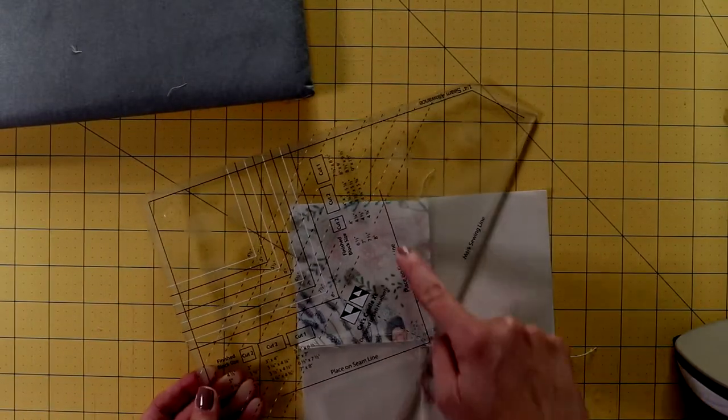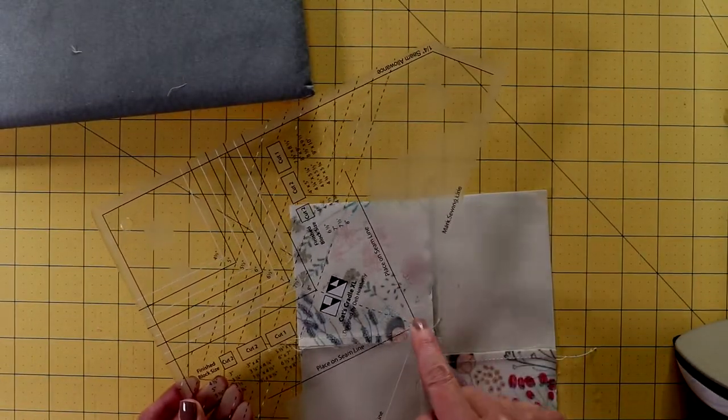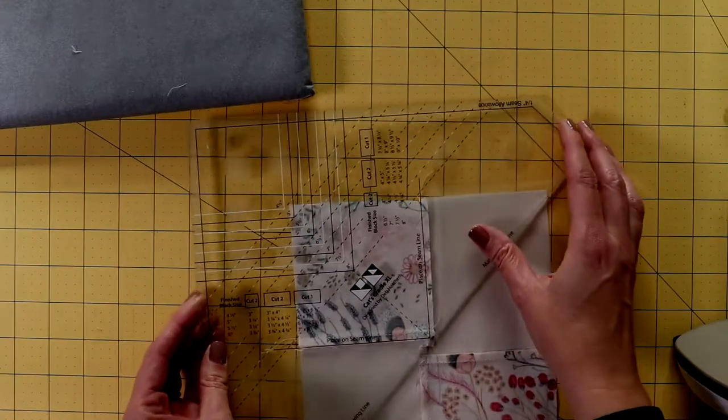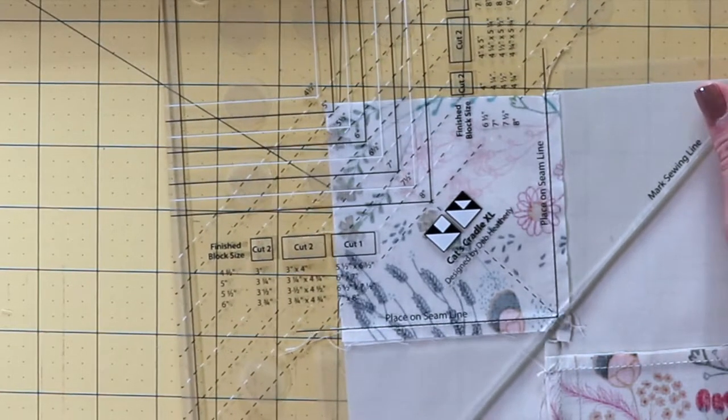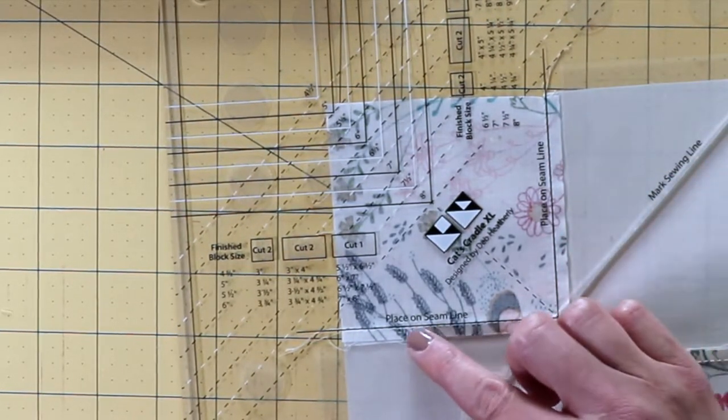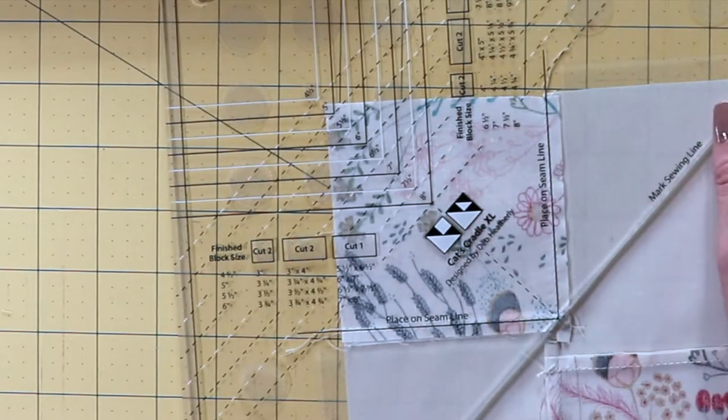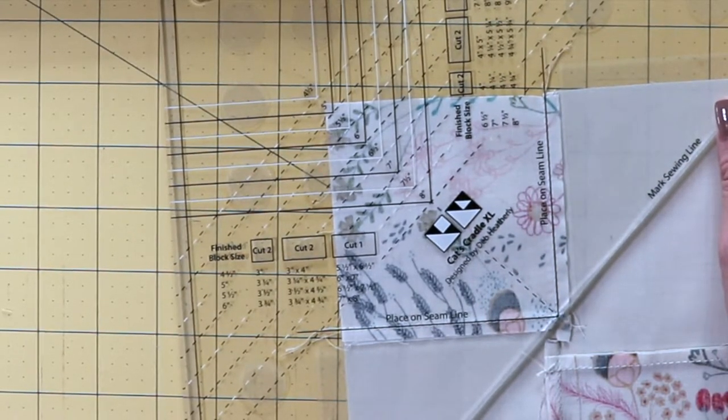You want to find the line that says place on seam line—it's a solid line. And it also has marked sewing line below. You're going to put that solid line right on the stitching line of one of the corners. So make sure that it is covering that.